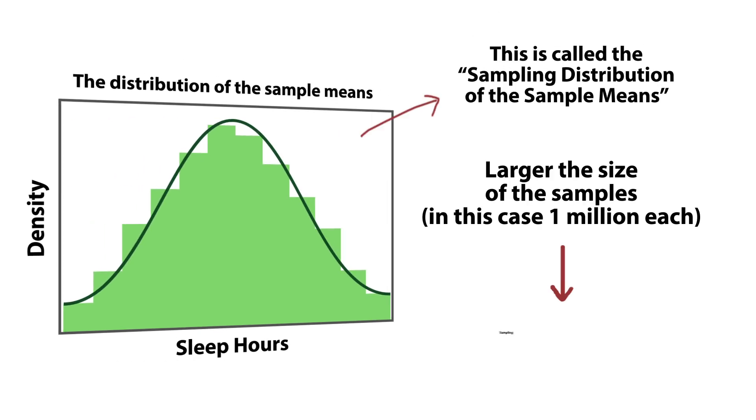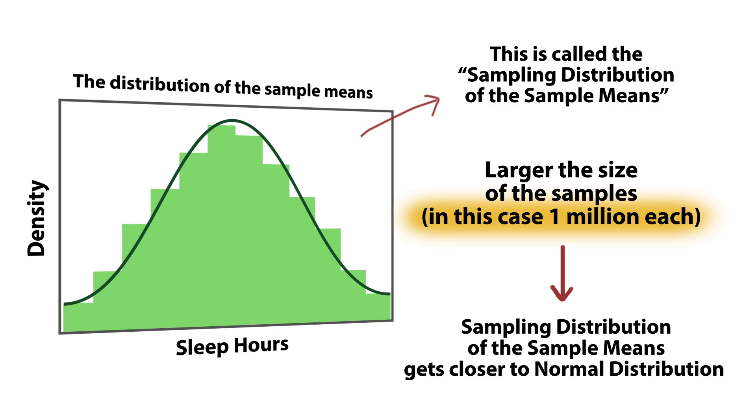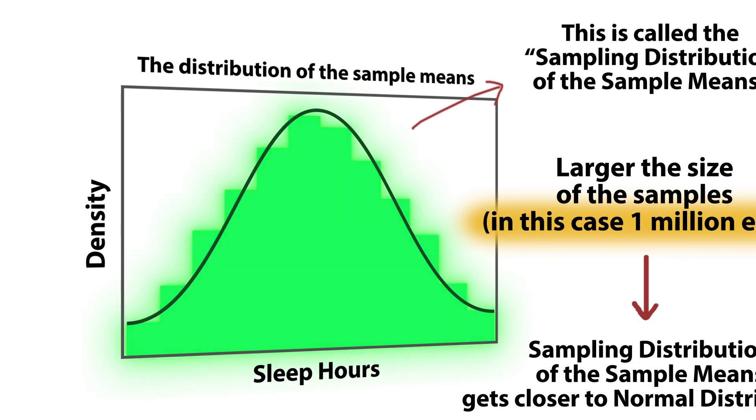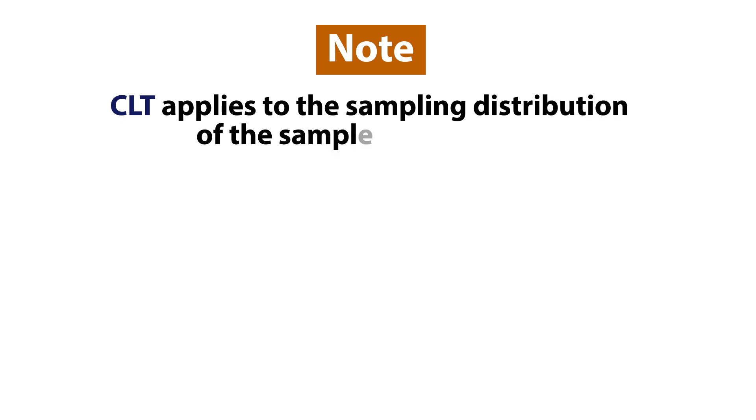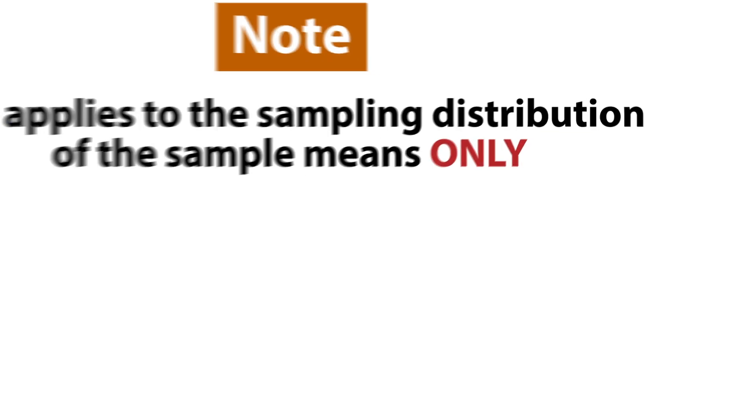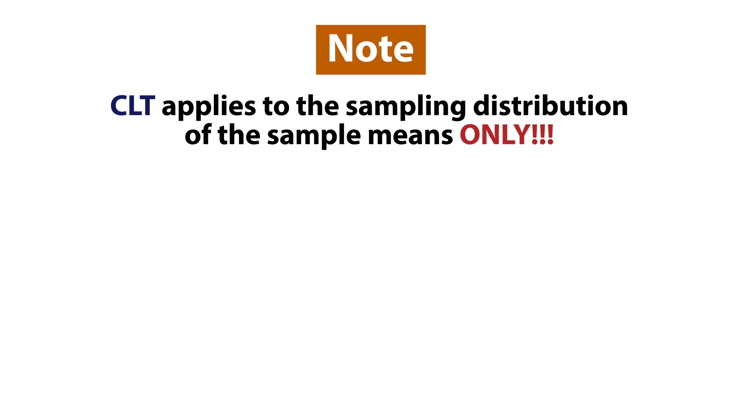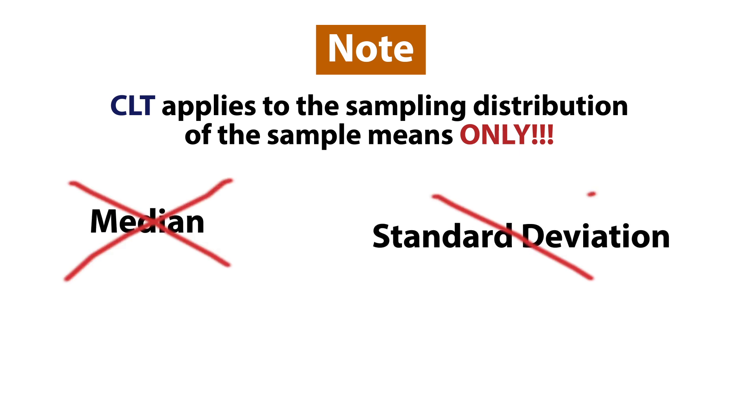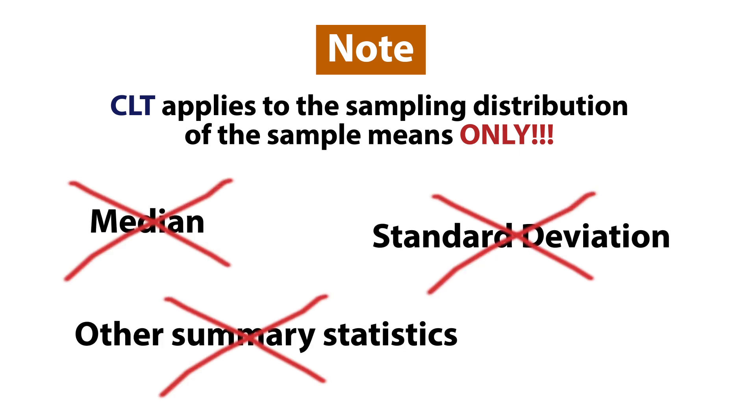Since a sample size of 1 million is quite large, we can assume that the CLT holds in this case. However, note that this theorem applies specifically to the sampling distribution of the sample means only. It does not apply directly to medians, standard deviations, or other summary statistics.